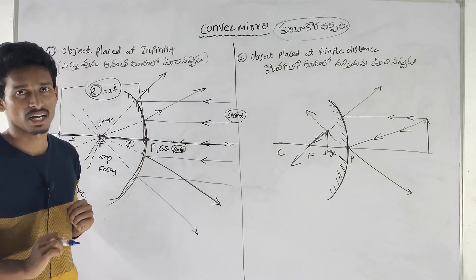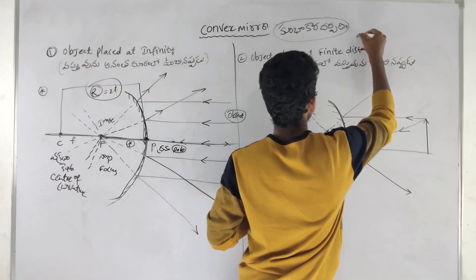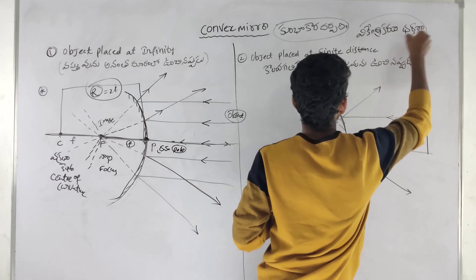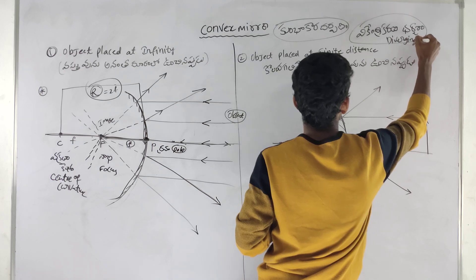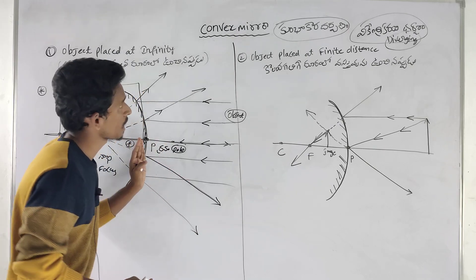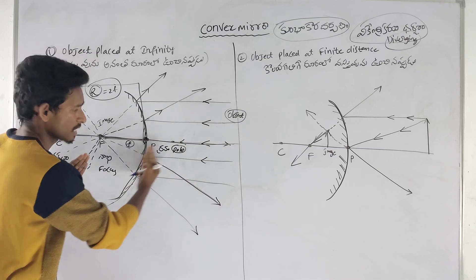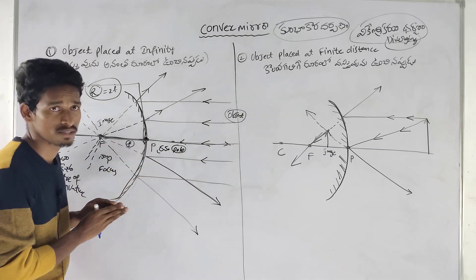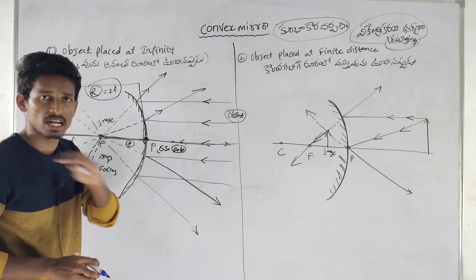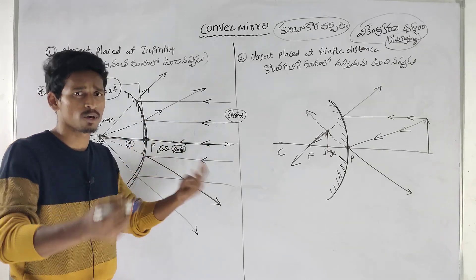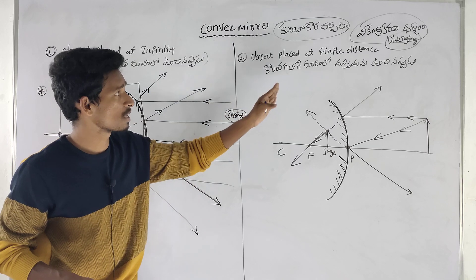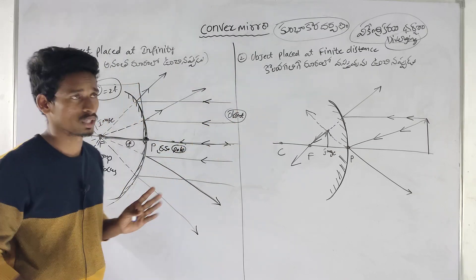This is a diverging mirror. That is why we call it a diverging mirror — VIKENDRI KARNA DARPANAUM. This is a very important topic. The rays diverge; that is why it is called a diverging mirror. There are two cases for when VIKENDRI KARNA DARPANAUM applies.